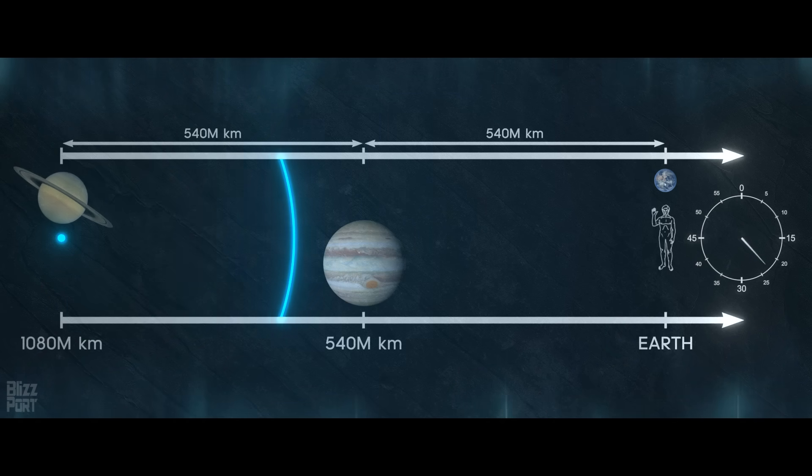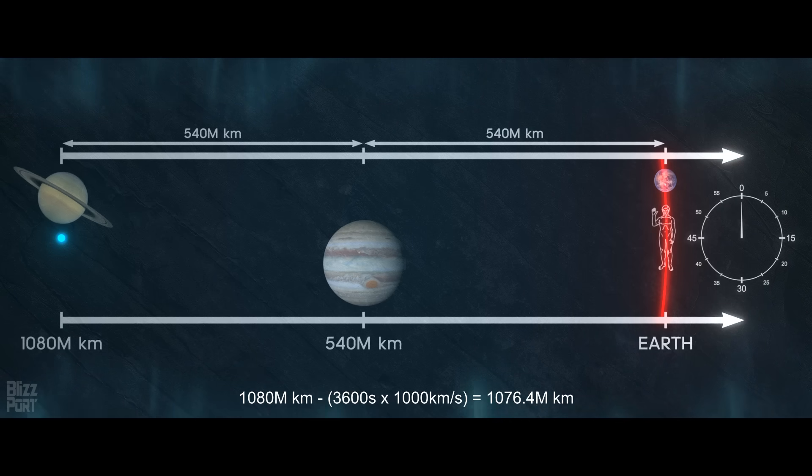If the sphere moves toward us at a velocity of 1000 km per second, our initial observation will place it at a distance of 1,080,000,000 km, and 60 minutes later we will observe it at a distance of approximately 1,076,000,000 km. For both the observer and the sphere, the sphere has traveled a total of 3,600,000 km in 60 minutes, which is consistent with its velocity and does not present any unusual behavior.